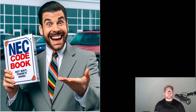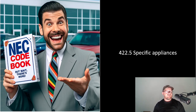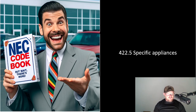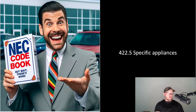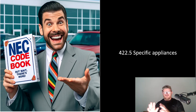A couple of specific areas I want to call out: 422.5. When you get to 422.5, it's going to call out specific appliances. Thankfully, this one is directly tied with 210.8 — I believe it's Part D, depending on what code cycle you're in — and it's going to lead you over to 422.5. In the same way, if you're an appliance person, it will also say there are other GFCI requirements back in 210.8. But in 422.5, it calls out specific appliances, whether receptacles or hardwired, by name.